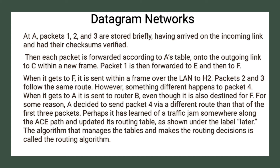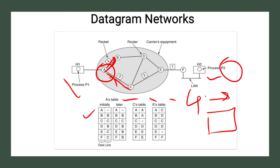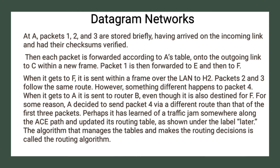However, something different happens to packet 4. When it gets to router A, it is sent to router B even though it is also destined for F. For some reason, A decided to send packet 4 via a different route than the first three packets — perhaps it has learned of a traffic jam somewhere along the A→C→E path.